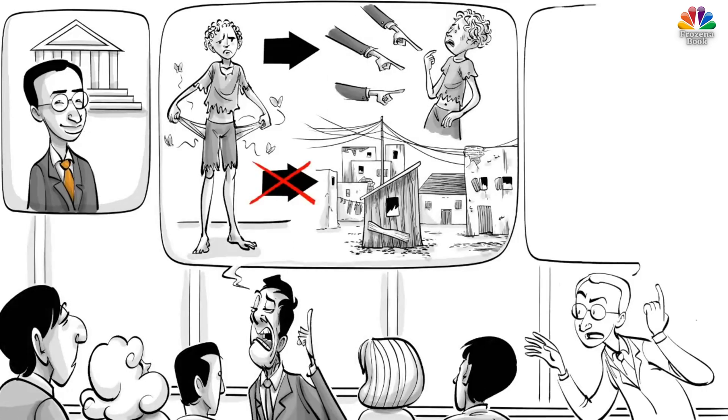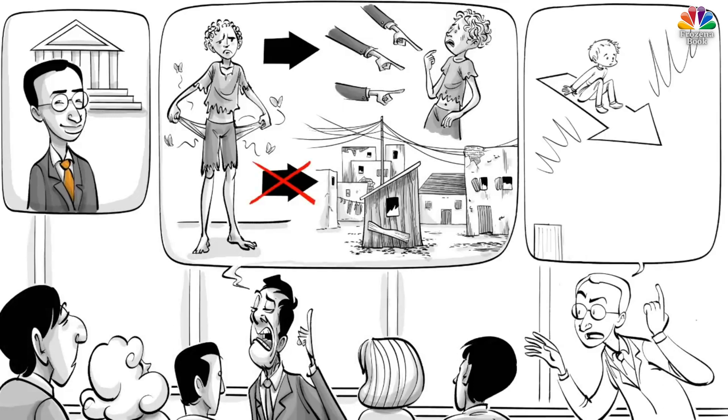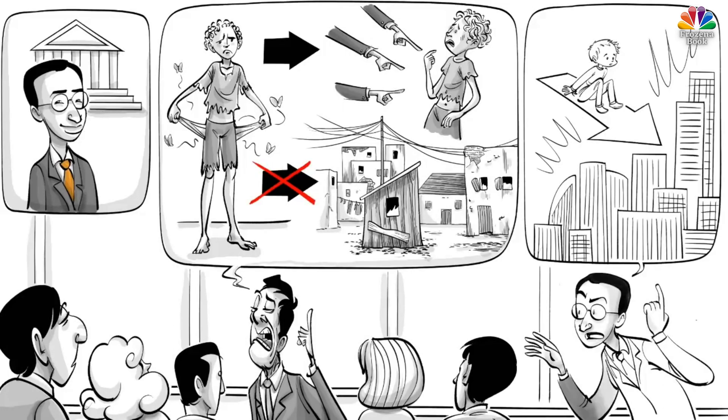The psychologist, Yuri Bronfenbrenner, wanted to change that and convince the world that to help those less fortunate, we also needed to change their surroundings. But did he succeed?